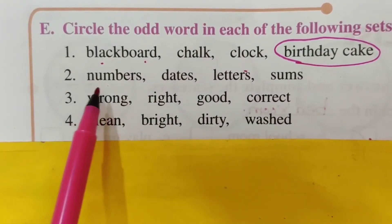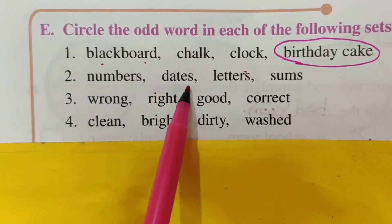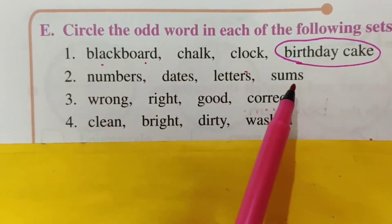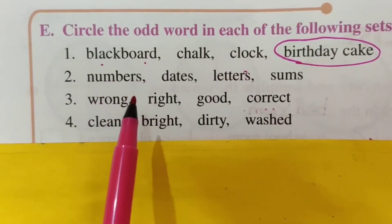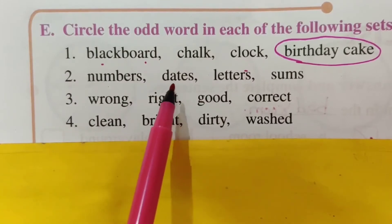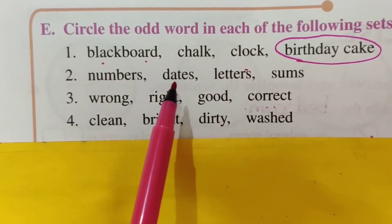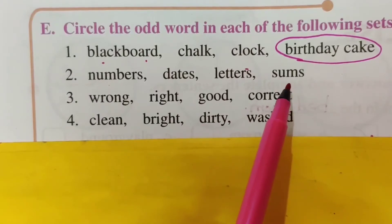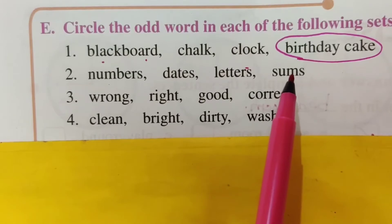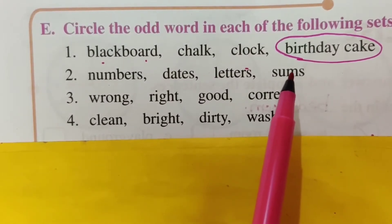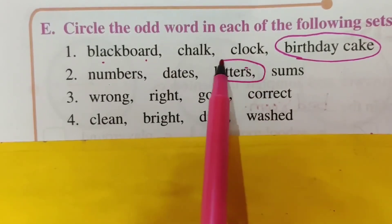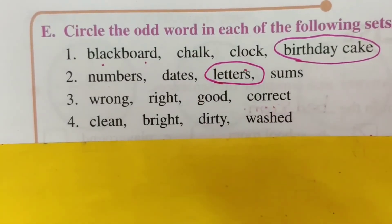Now the second set: numbers, dates, letters, sums. Numbers, dates, and sums are all related to numbers only. We write dates with numbers, and sums involve additions and calculations with numbers. So which is the different one? Letters are different. So circle 'letters.'